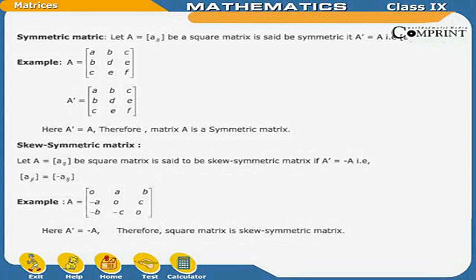Skew symmetric matrix: Let A be the matrix Aij. A square matrix is said to be a skew symmetric matrix if the transpose of A is equal to minus A. That is, Aji equals minus Aij. For example, let matrix A equal to [0, a, b; minus a, 0, c; minus b, minus c, 0]. Here, the transpose of A equals minus A, therefore this square matrix is a skew symmetric matrix.